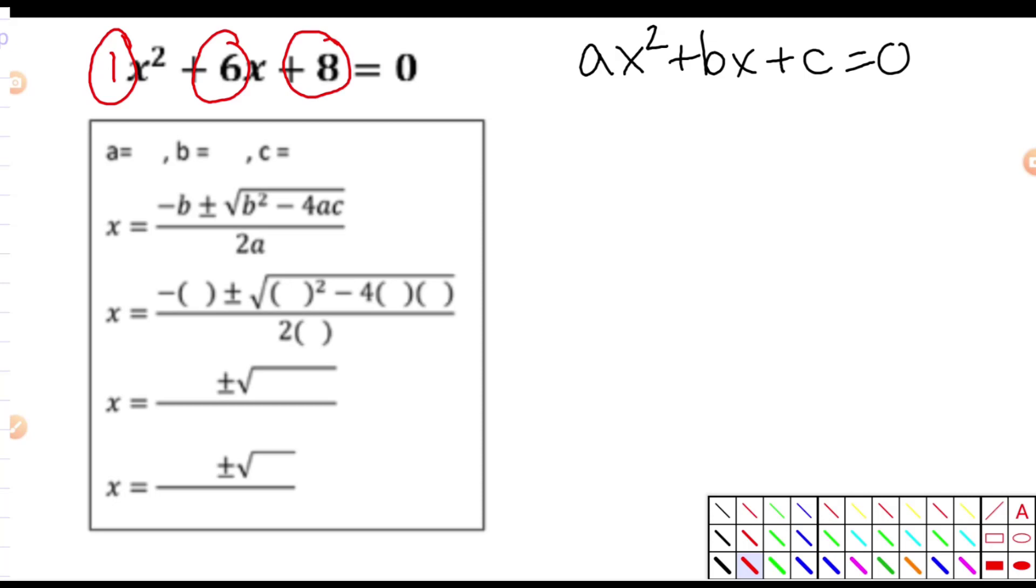and that's going to be a 1 since it's not written. b will be this value and that's a positive 6. And c will be this value. So let me just write those down. So again, I usually always write down what a, b, and c are. So a is 1, b is positive 6, and c is 8. So now another good habit that I usually tell my students is to write down the quadratic formula every time you're going to use it. Just it helps you memorize it. It helps you put it in your brain.